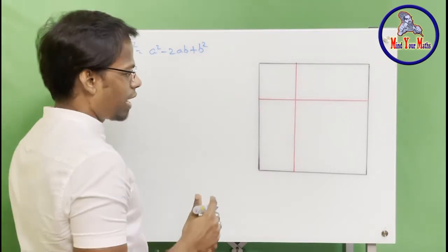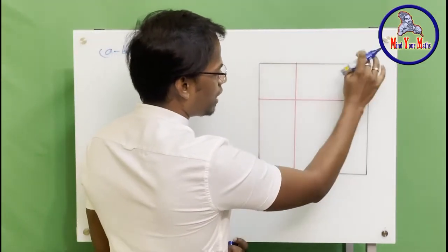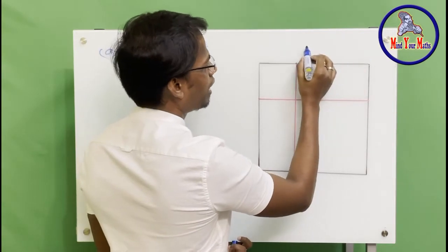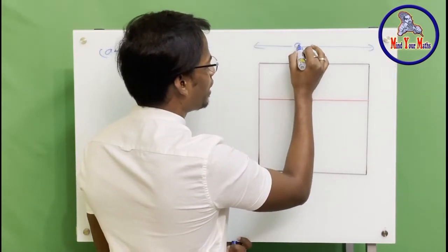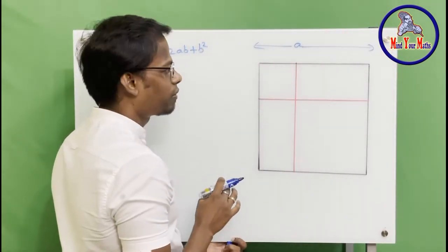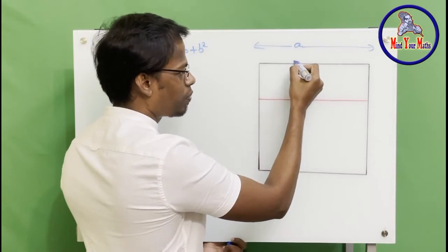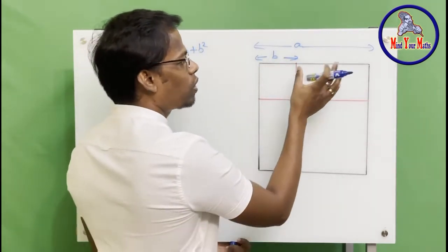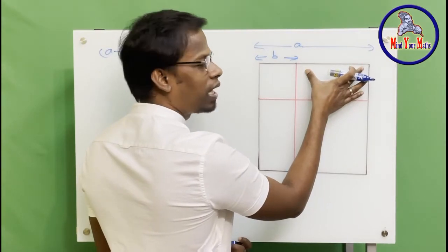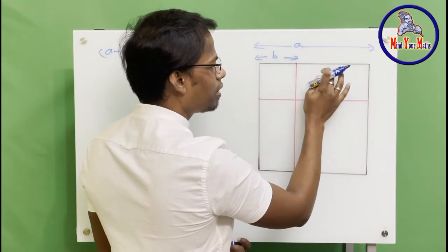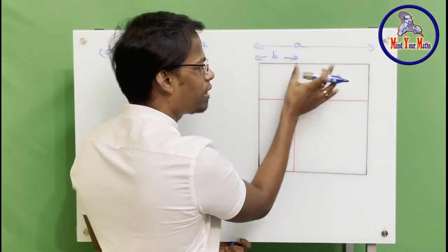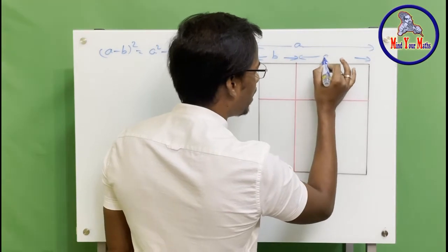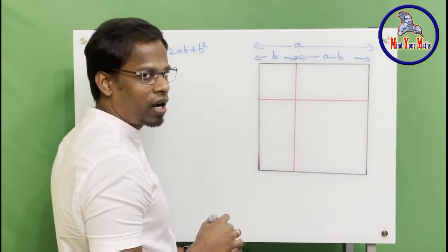We will take a bigger square, and then it is partitioned inside. For the bigger square, the length of one side is 'a'. We will take a point here, and until that point the length is 'b'. Then what will be the length of the remaining part? If you take 'a' and subtract 'b', then that remaining length is 'a - b'. So the side of this portion is 'a - b'.